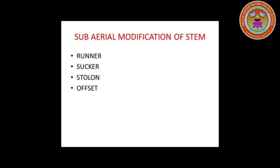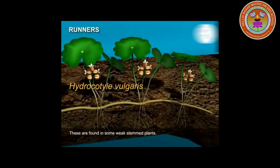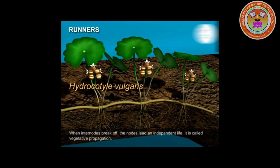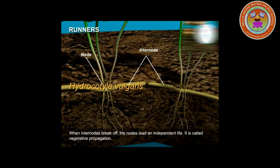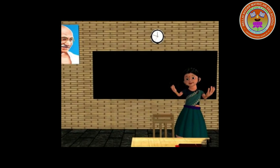Now we are going to learn about the Runner. It is a creeping stem with long internodes running horizontally on the soil surface. The nodes bear axillary buds, scales, and adventitious roots. Runners arise from an axillary bud. A mother plant often produces a number of runners in all directions. Runners break off and grow into individual plants. Example: Hydrocotyle vulgaris.